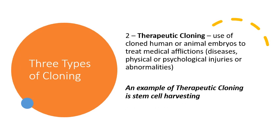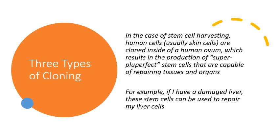The second type of cloning is called therapeutic cloning. This refers to the use of cloned human or animal embryos to treat medical afflictions like diseases, physical or psychological injuries or abnormalities. An example of therapeutic cloning is stem cell harvesting. In that case, human cells — usually skin cells — are cloned inside of a human ovum, or egg, which results in the production of super-pluperfect stem cells that are capable of repairing tissues and organs.